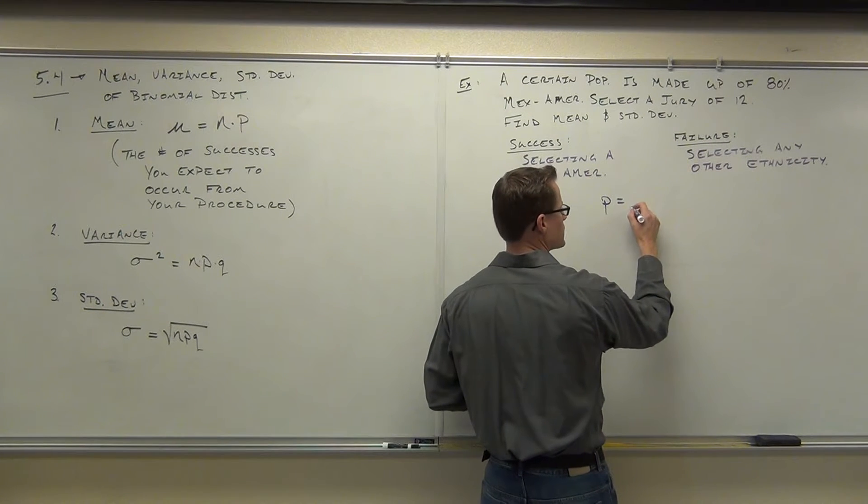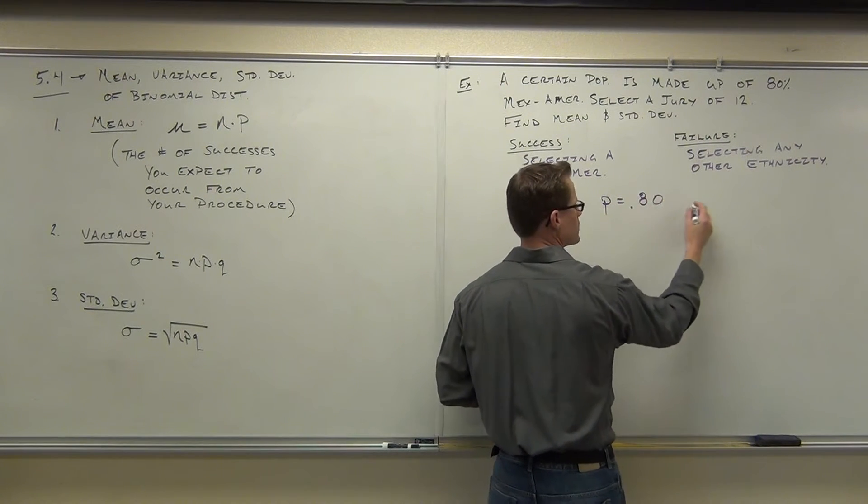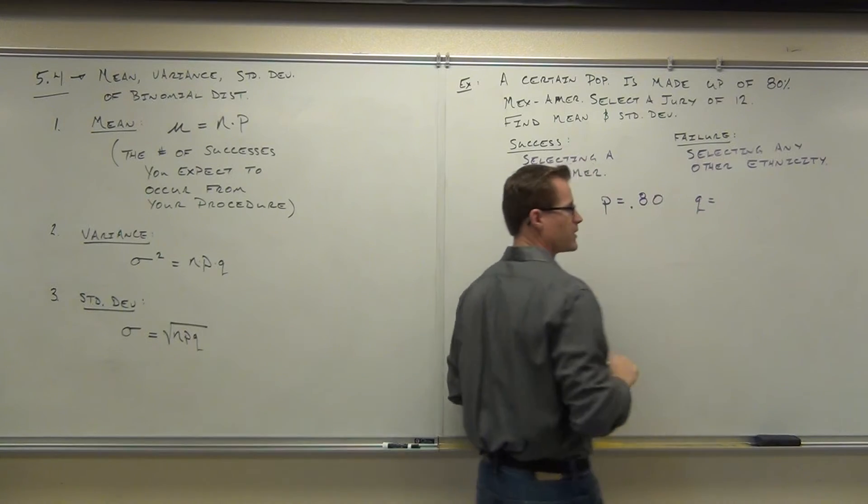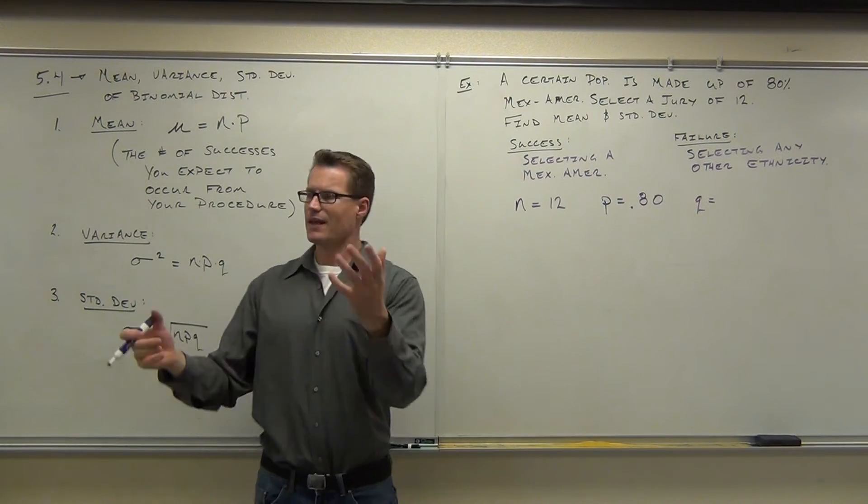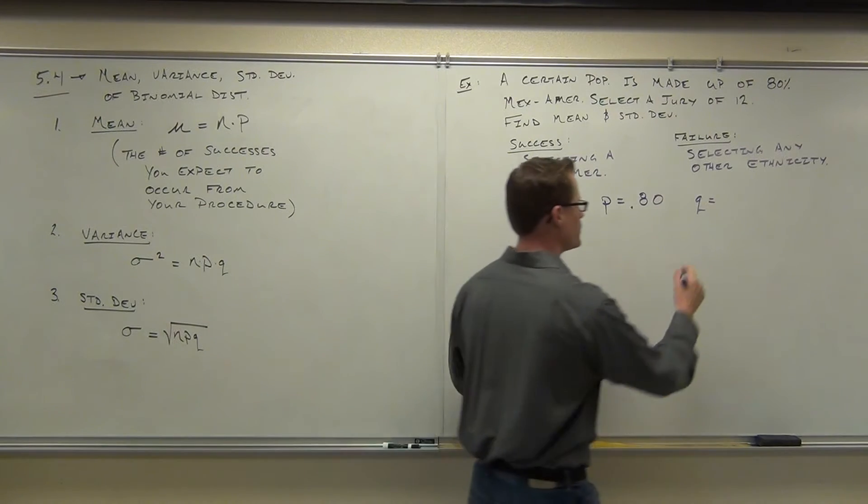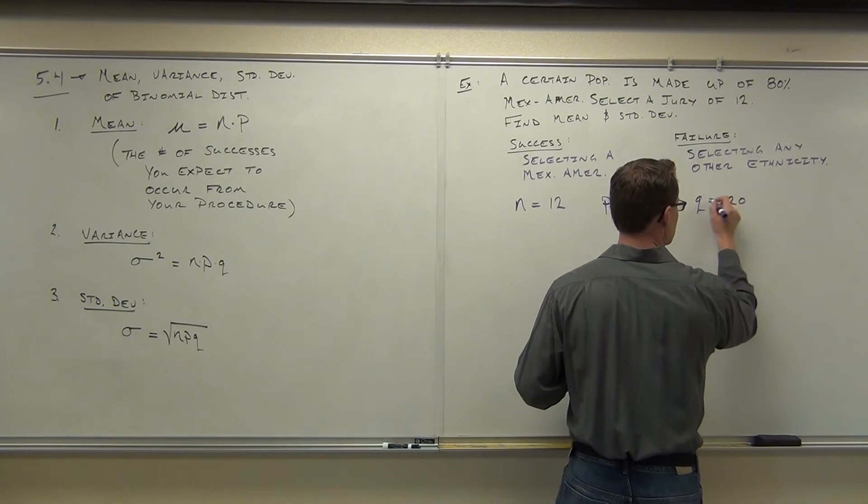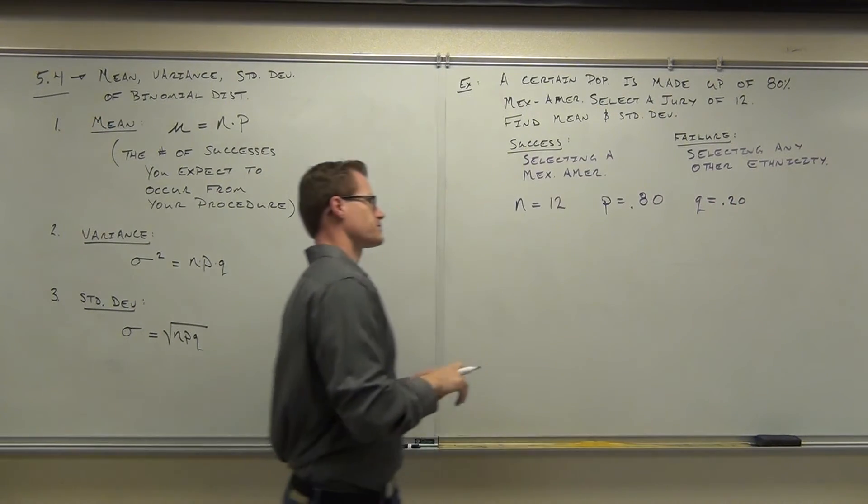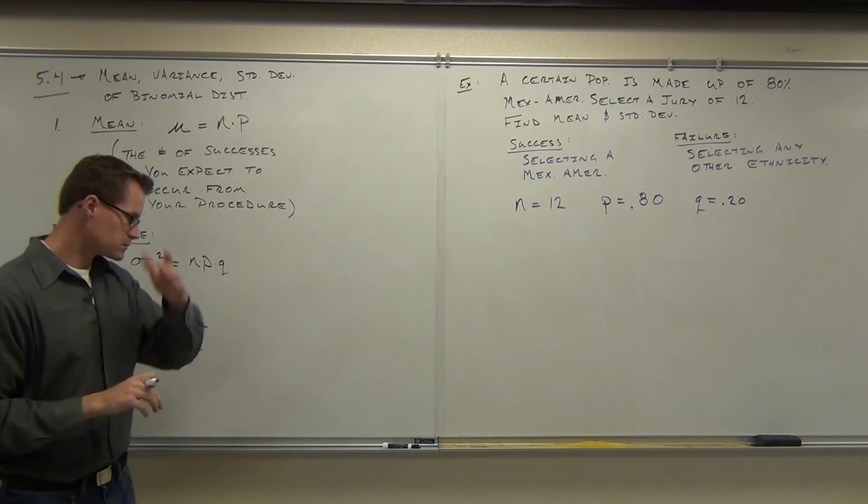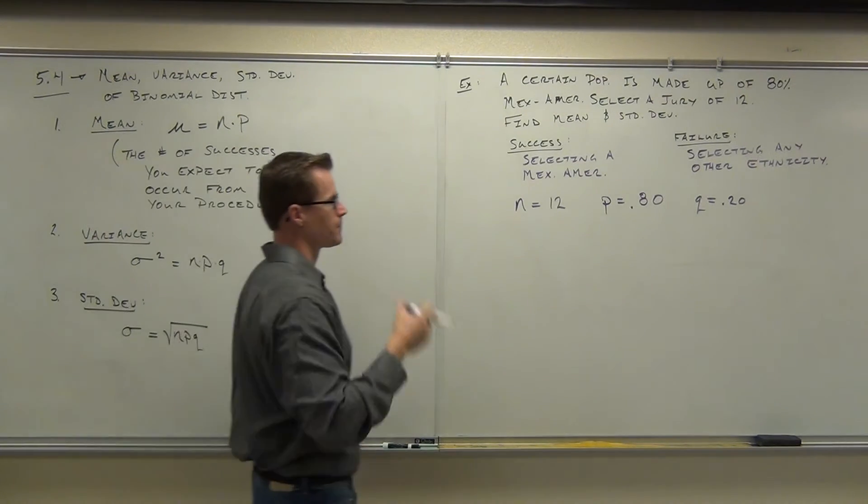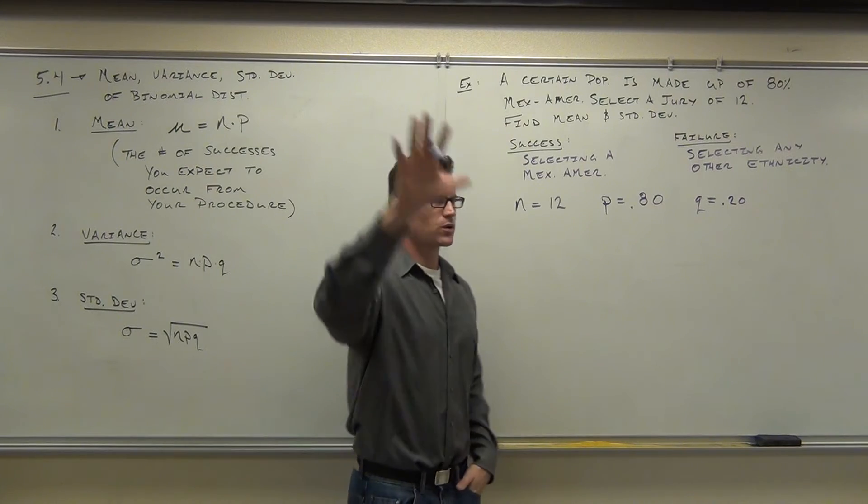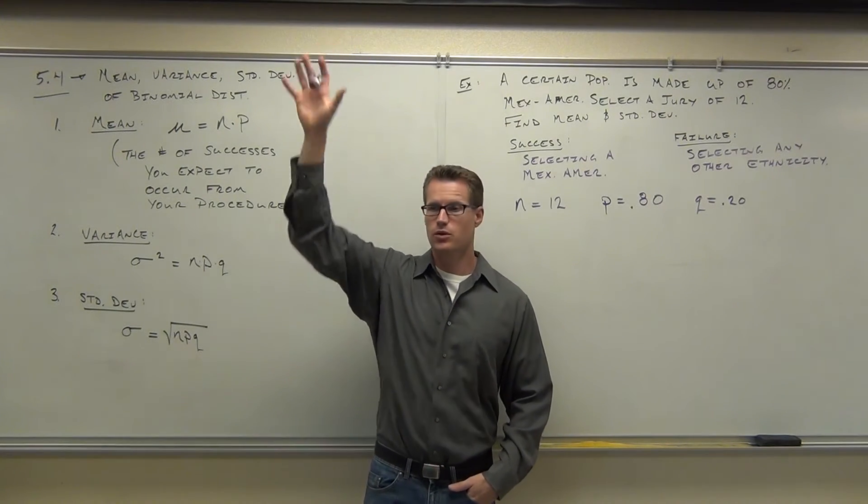So, here, our probability of success for us is 0.80. Can you tell me what's the probability of failure? 20%. Great. Yeah, that's clear, because the rest of our population is not Mexican-American. That would be 20%. Let's go ahead.